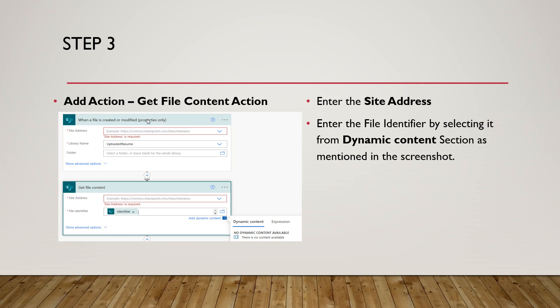In step three, add an action after the trigger. The action name is 'Get File Content.' In Get File Content, select the site address, and in the file identifier field, click the text box — a pop-up will open. From the dynamic content, choose the identifier. Once done, save the flow and move to step four.